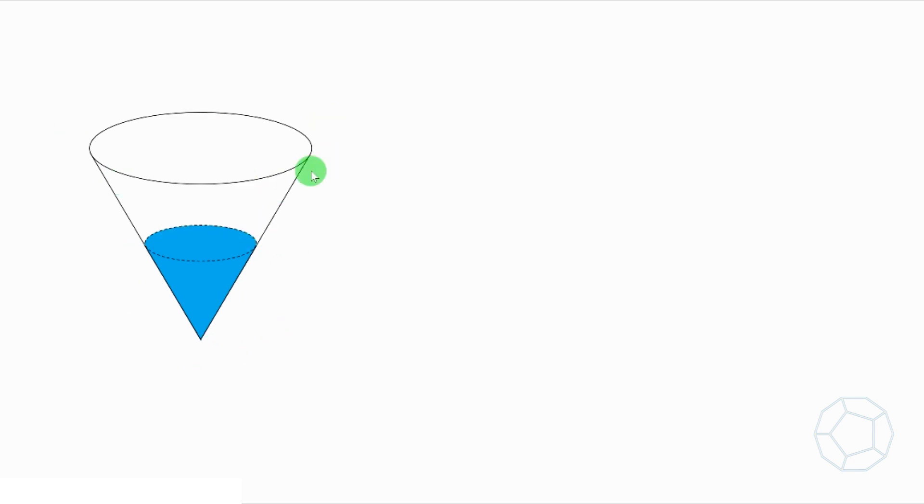A container is in the shape of right circular cone. The water level is 1 cm and the height of the cone is 2 cm. If we turn it upside down and assume that there's no water leaking, find the new water level.